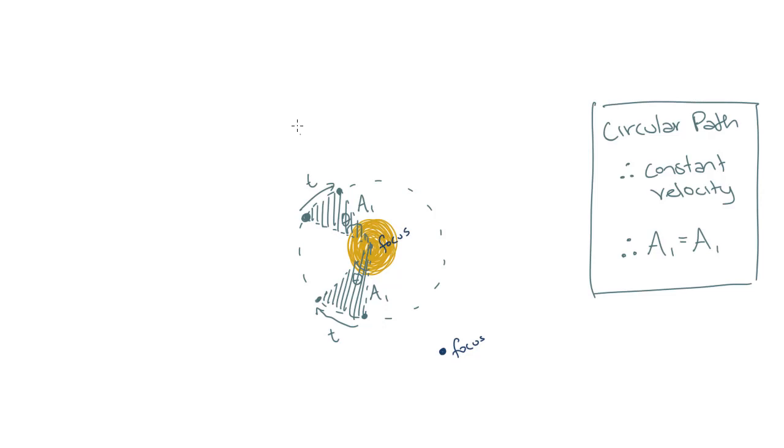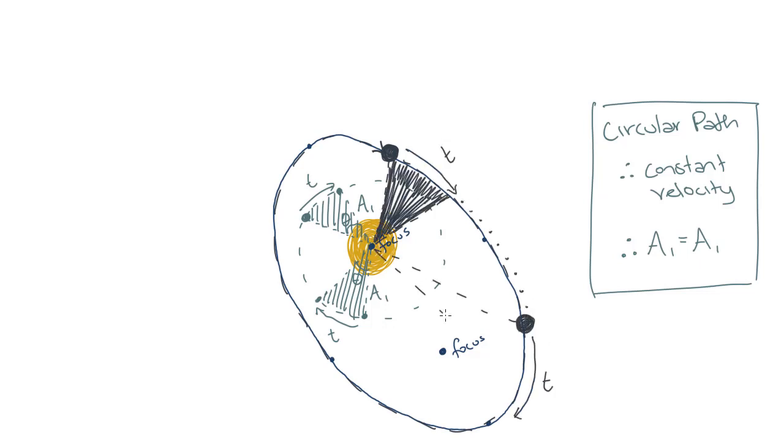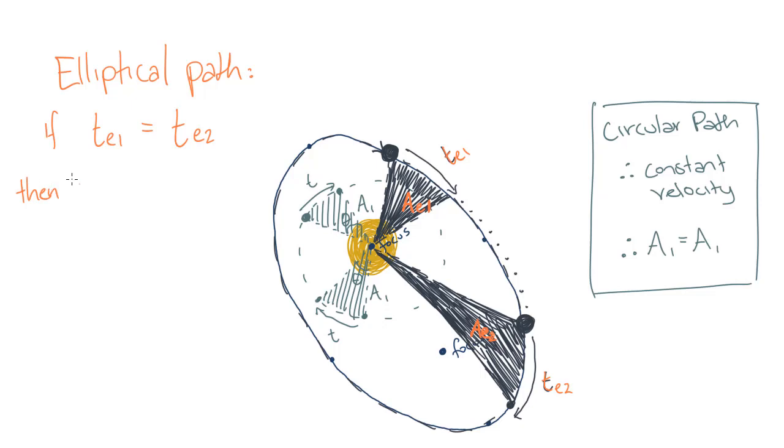However, for an elliptical path, the planets will not be travelling at a constant speed, so it's not obvious that equal areas would be swept out. But this is exactly what Kepler's second law tells us. A planet must also travel further along the path when it is closer to the Sun to sweep out an equal area. Therefore, Kepler's second law also tells us that a planet moves faster when it's closer to the Sun.